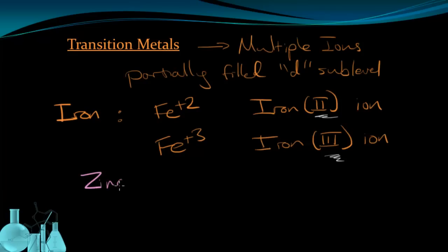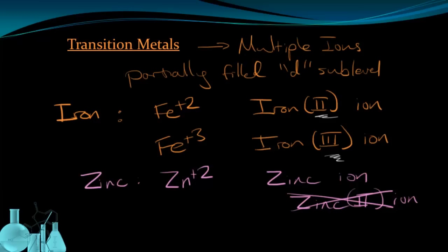However, if we look at an element like zinc, zinc only has one option. Zinc is a 2+ ion only. It's not going to form any other kinds of ions. So we just call this a zinc ion. We do not call it a zinc (II) ion simply because it's a transition metal. So this one we don't use. We only use Roman numerals when there's multiple possibilities for the charges of the ions formed.